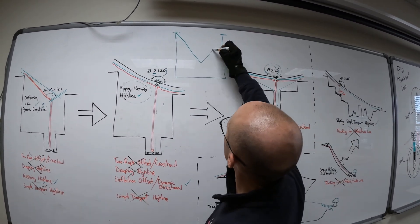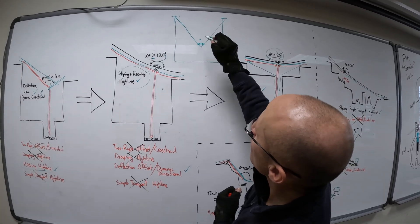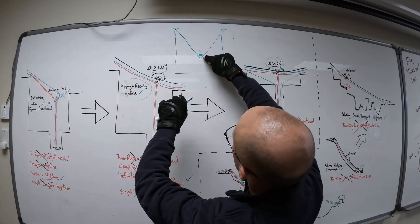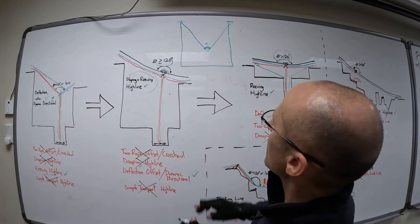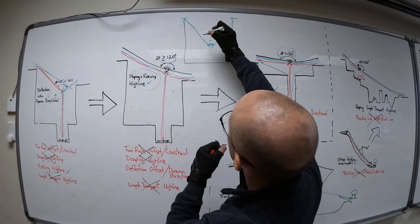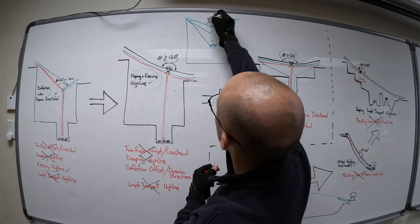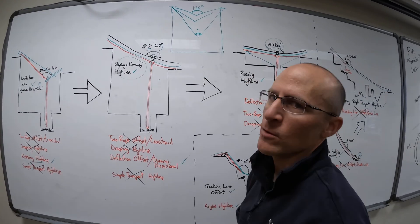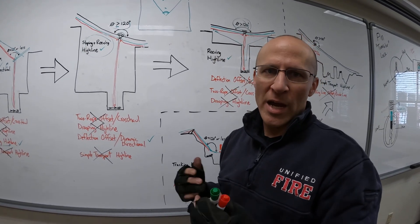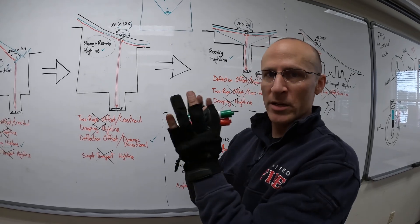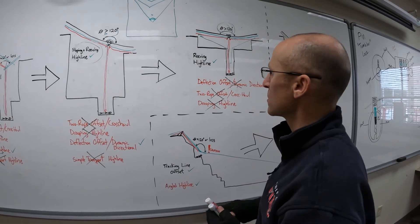You can maintain a good angle — the internal catenary can stay at 120 or less — and work together on both sides to move this from here, down, across, over, and up. But if both sides are hauling at the same time on a two-rope system or cross-haul, you have the potential to get greater than 120 degrees, so you've got to be careful operationally. Same thing with the deflection offset dynamic directional — you can't exceed those internal catenary angles. When you do, your forces change. You have to understand the forces in your system.